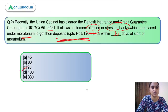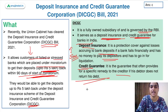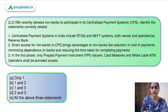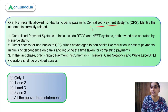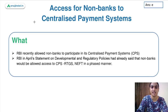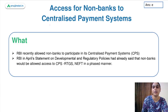Moving back to question 2, the answer is option C — 90 days. Moving on to question number 3: RBI recently allowed non-banks to participate in the centralized payment systems. You have to identify the statements which are correctly related. Let's discuss this first and then come back to the question.